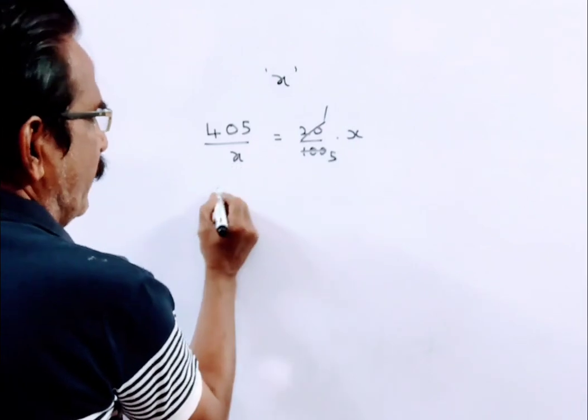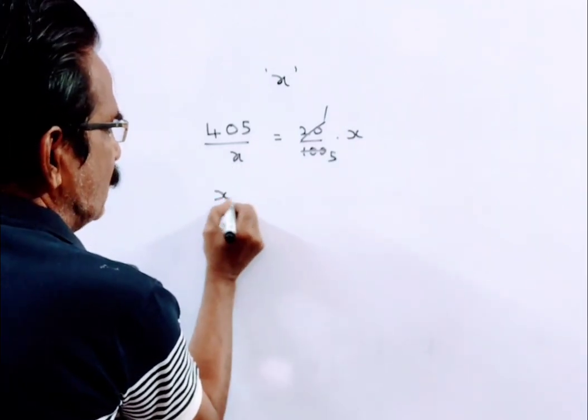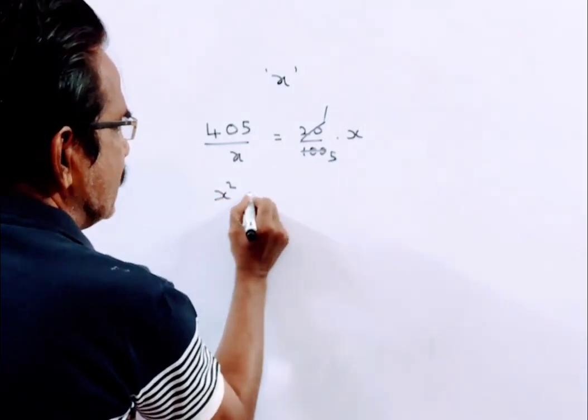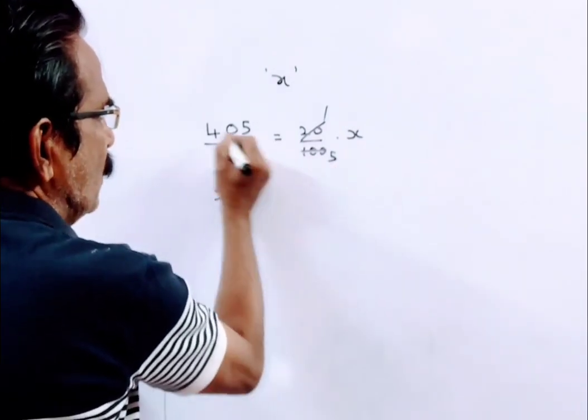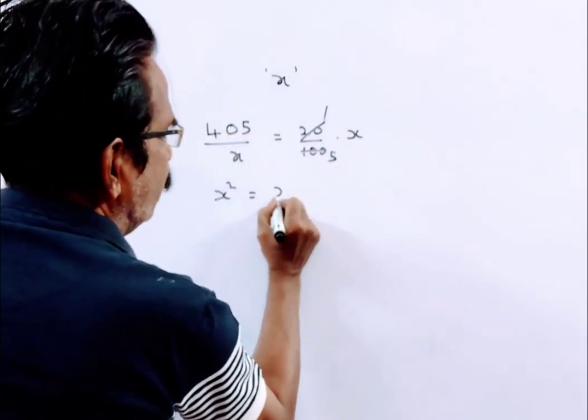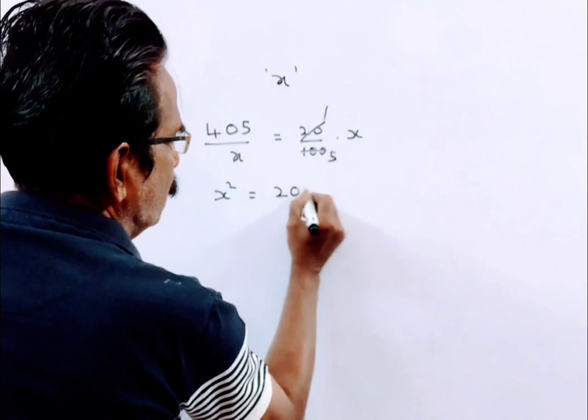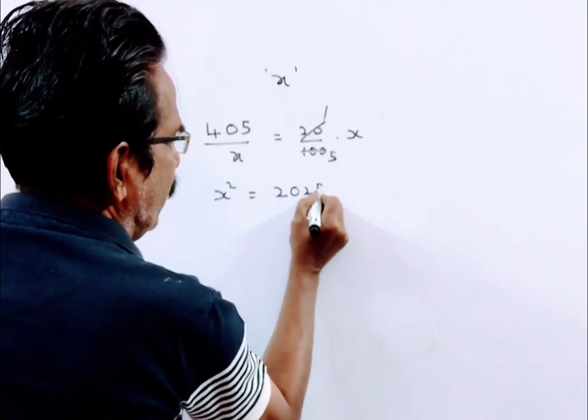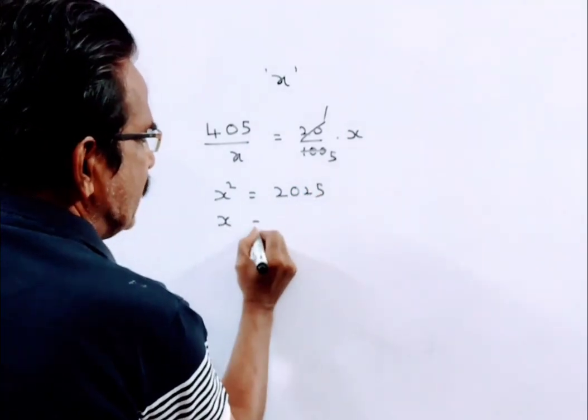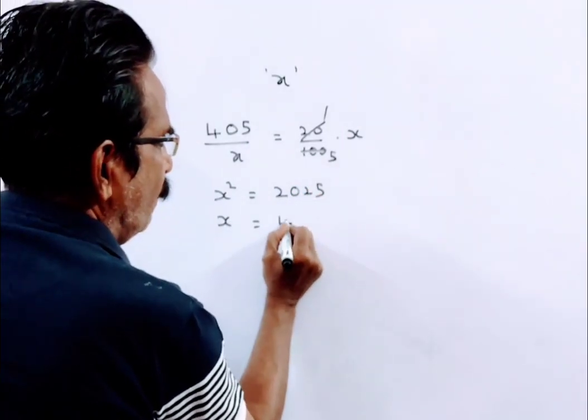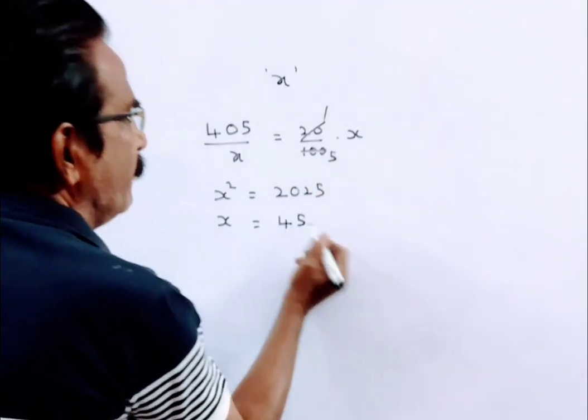Now, x squared is equal to 2025, and x is equal to 45.